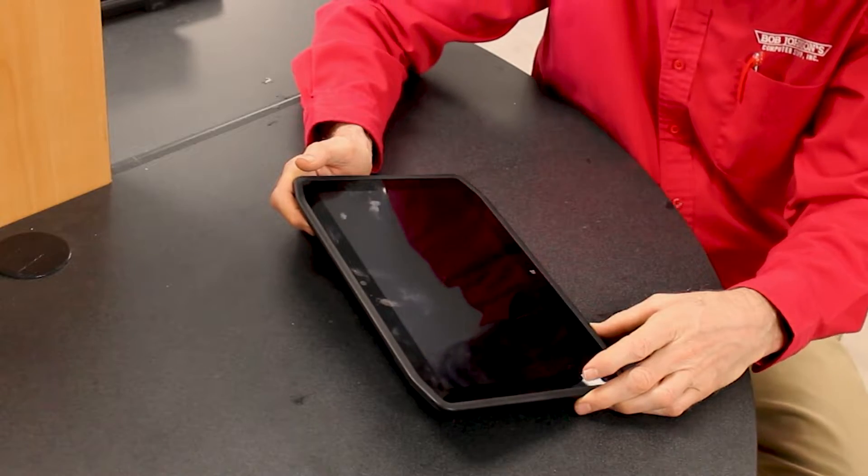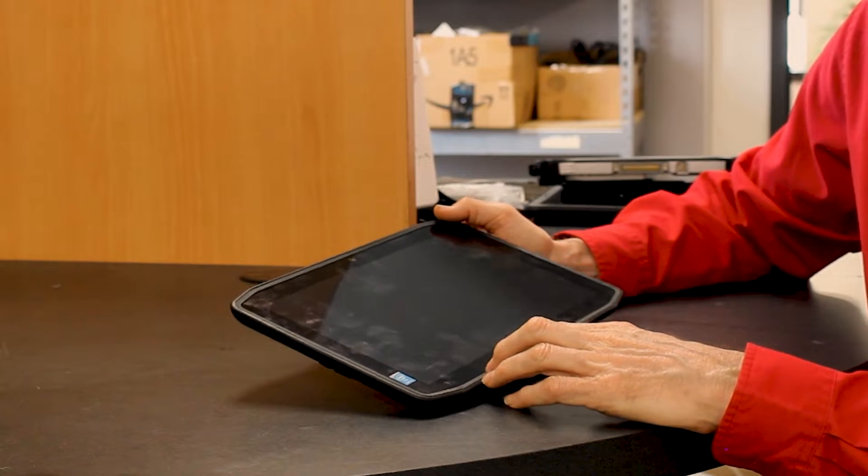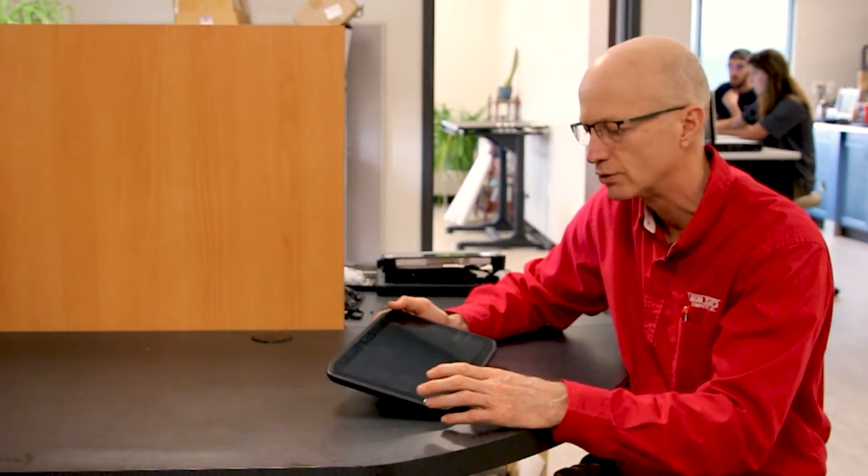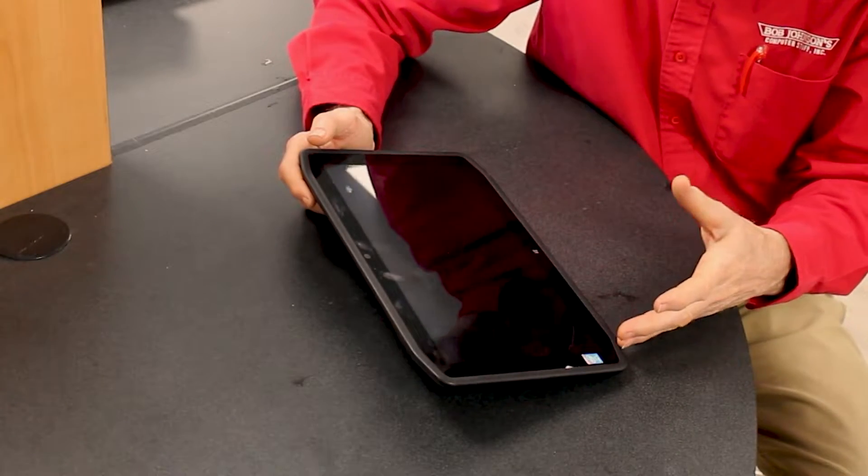Number five is the fully high-definition screen. This is a 1920 by 1080 pixel screen which comes in very clear.